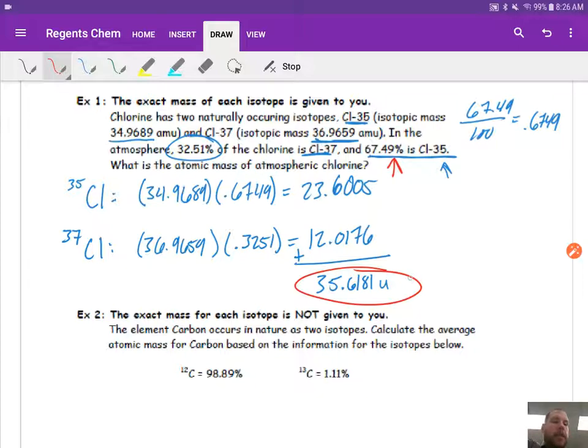Now, for the sake of review, let's think about how would we report this to correct sig figs. So we would look at the number of decimals, because we're adding. They each have four, so that would be the correct number of sig figs. So it is correct sig figs already. Remember, you only have to report to correct sig figs if the problem asks you to.